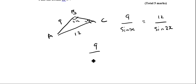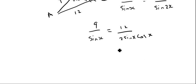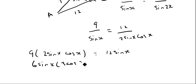Now I could rewrite that as 9 over sine x equals 12 over 2 sine x cos x, just using the double angle formula. If I rearrange this, I'm going to get 9 times 2 sine x cos x equals 12 sine x. And again, if I take everything to one side, I'm going to finish up with 6 sine x times 3 cos x minus 2 equals zero.